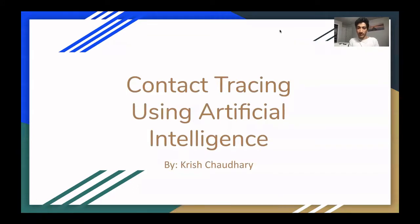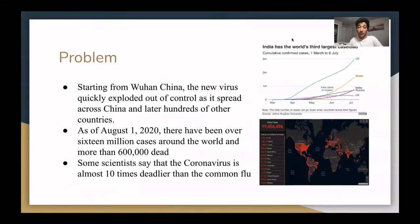Hello, my name is Chris Chaudhary and I've created an artificial intelligence that can use contact tracing to help slow the spread of the coronavirus. As we all know, the coronavirus is a huge problem in our society today. Starting from Wuhan, China, the new virus quickly exploded out of control as it spread across China and later hundreds of other countries. As of August 1, 2020, there have been over 16 million cases around the world and more than 600,000 dead.